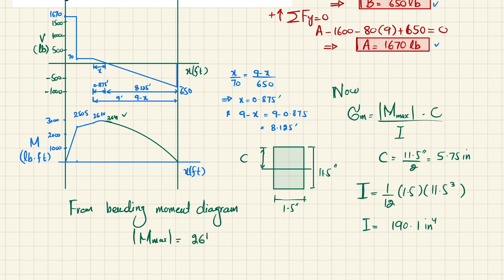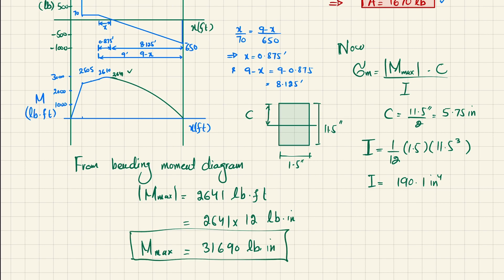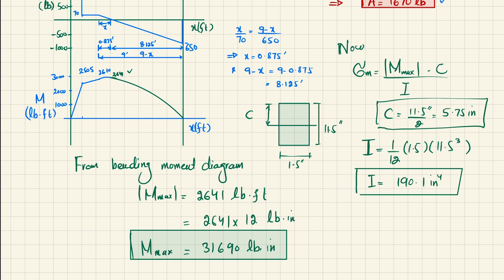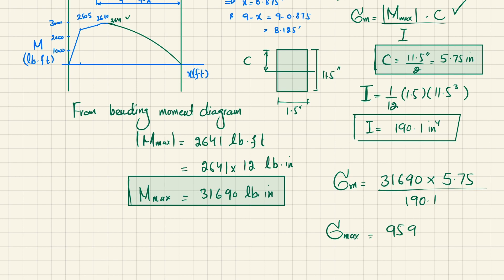The maximum bending moment from the diagram is 2641 pound-feet, converted to pound-inches: 2641 times 12 equals 31,690 pound-inches. Applying the bending stress formula: stress equals 31,690 times 5.75 divided by 190.1, which equals 959 psi. This is the maximum normal stress due to bending.